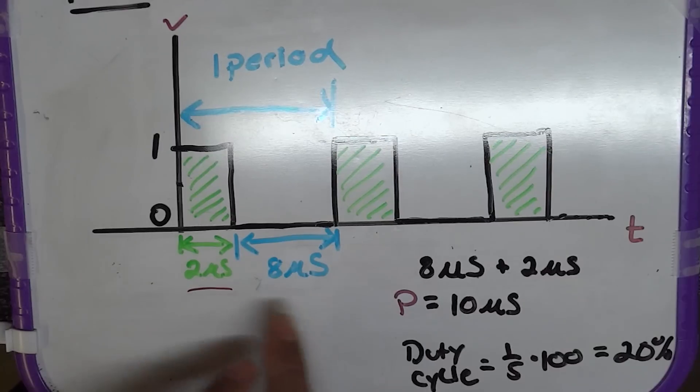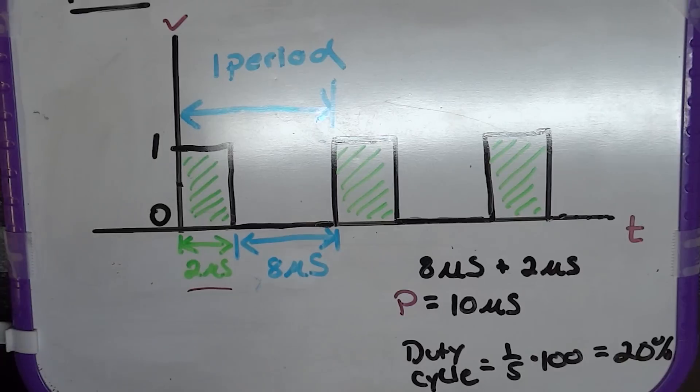Because you have 2 over 10, the microseconds cancel. You have 1 fifth at the end and you multiply that by 100, which gives you the 20%. So, that's easy enough. What does this mean?